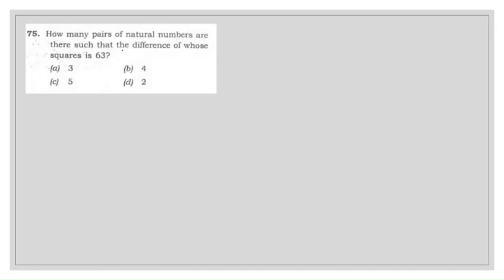The next question asks how many pairs of natural numbers are there such that the difference of whose squares is 63. Basically, we need to find how many pairs of natural numbers are present where the difference of their squares equals 63. The equation formed here is x² minus y² equals 63.